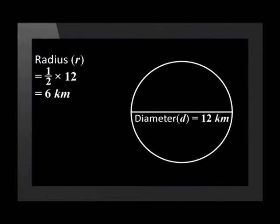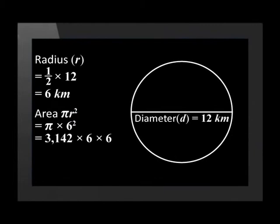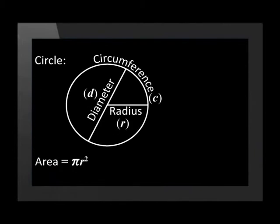To calculate the area of a circle, we need the length of the radius. Remember, the radius is equal to half the diameter. So it must be 6 kilometers. The area is thus pi multiplied by the radius squared, that is, the radius multiplied by itself. We calculate 3.142 times 6 times 6 and find that the area is 113.112 square kilometers. To calculate the area of a circle, we need to square the radius and then multiply it by pi.